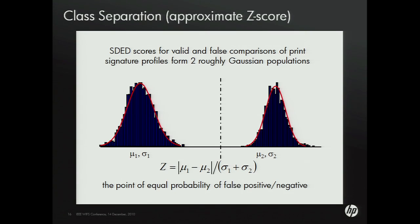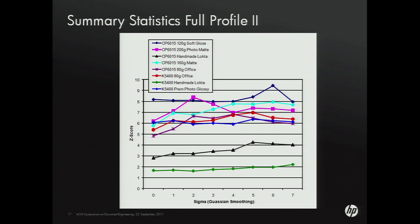Another way we can represent the difference between our populations of correct and incorrect matches is to use a modified Z-score, which gives the distance between two populations. Looking at results in this case, we find that apart from the two handmade paper types, we're getting good results with Z-scores between five and six and above. That means you've got like a one-in-a-billion chance of incorrectly getting a false positive or a false negative.